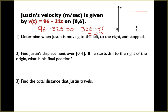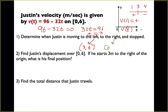Using our sign chart with t equals 3 in the middle, plugging in v(1) gives a positive value, and v(4) gives a negative value. So Justin is moving to the left — negative velocity — on the interval (3, 6]. He's moving to the right with positive velocity on [0, 3). He is stopped when t equals 3.